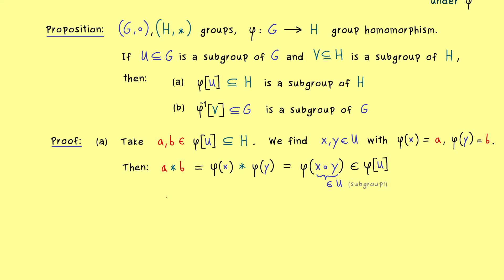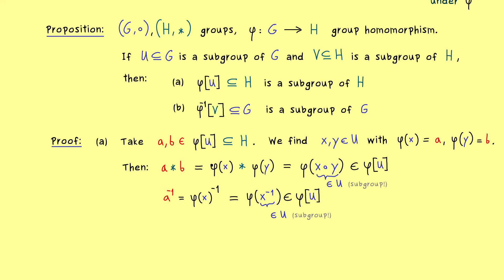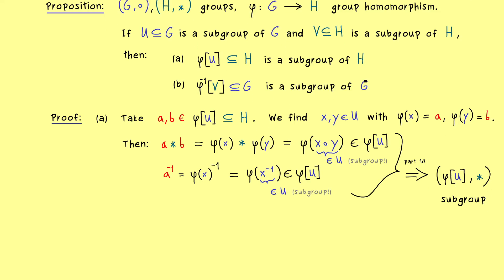The second part is that we cannot leave this set by using inverses. The inverse of A is well defined in the group H. We translate it to G using phi: A⁻¹ = (phi(x))⁻¹. Recalling from part 9, we can pull in the inverse operation for a group homomorphism, giving us phi(x⁻¹). This is well defined in G, and since U is a subgroup, x⁻¹ lies in U. So we cannot leave the image by taking inverses. These two things together are sufficient for having a subgroup, as discussed in part 10. With this, part A is proven: images of subgroups are always subgroups under a homomorphism.